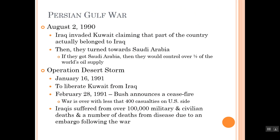One of the biggest things you need to know about H.W. Bush's presidency is the Persian Gulf War. On August 2nd, 1990, Iraq invaded Kuwait, claiming that part of the country actually belonged to Iraq. Then they turned towards Saudi Arabia. If they got Saudi Arabia, they would control over half of the world's oil supply. During Ford and Carter's administration, the lack of oil to the United States was a huge issue — it led to a recession, an oil crisis where gas stations had horrible lines and people couldn't get enough oil to heat their homes. So we were very concerned about a lack of oil control.